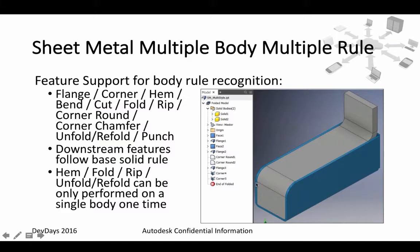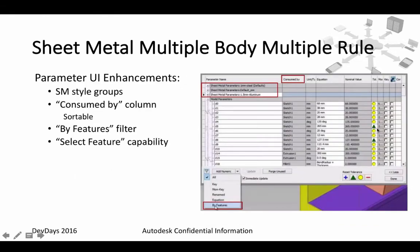There is feature support for body role recognition: the flange, corner, and all these features are supporting it. Downstream features follow base solid rule. Ham, fold, reap, unfold, and refold can only be performed on a single body at one time. Some UI enhancements as well: SM style groups, 'consumed by' column which is sortable, by features filter, and select feature capability.